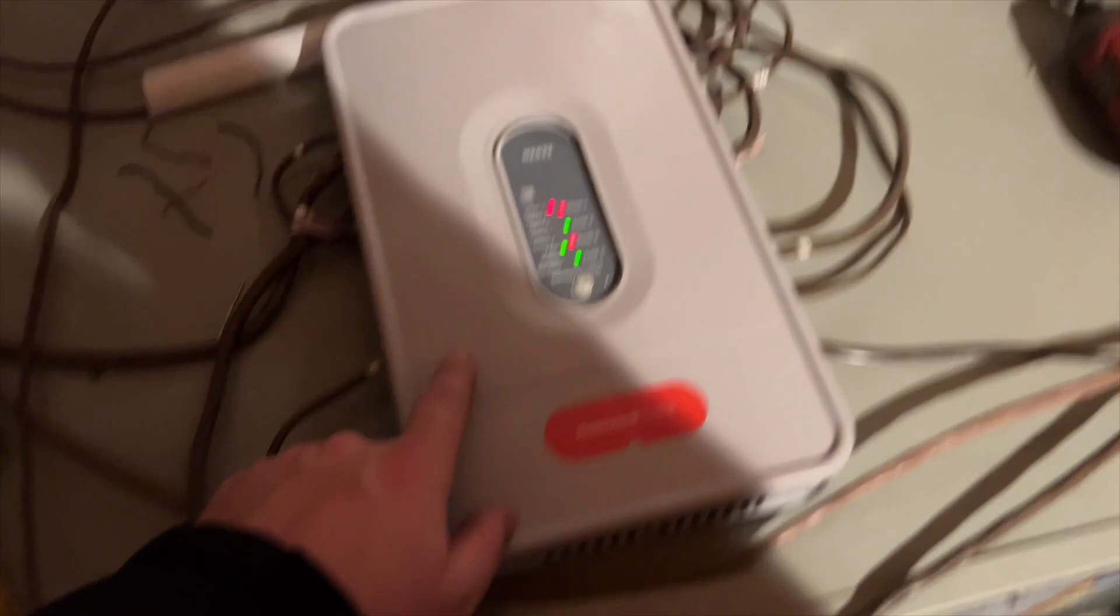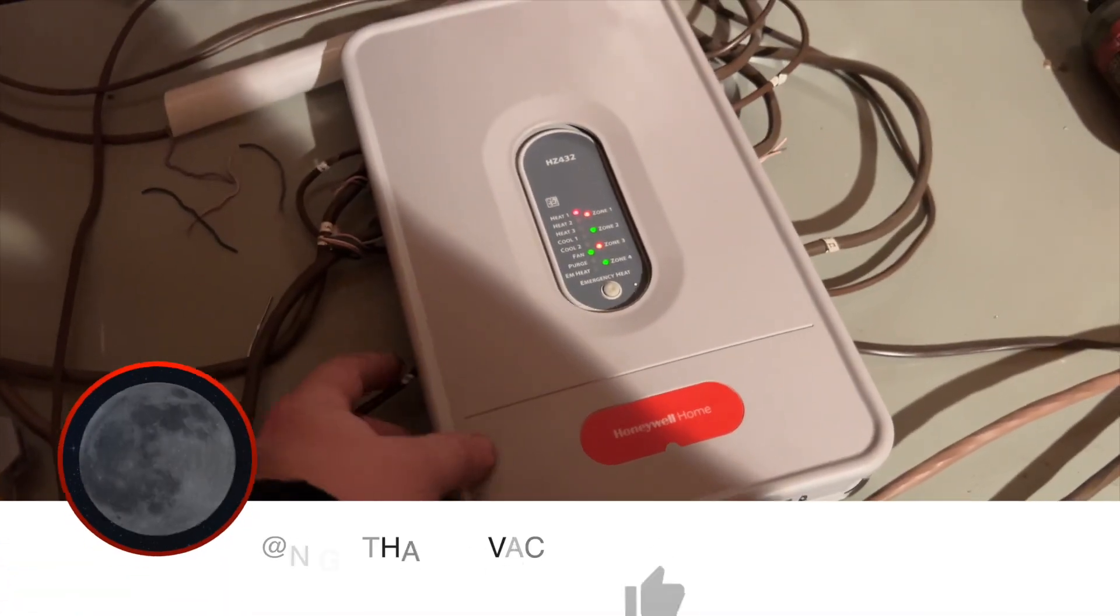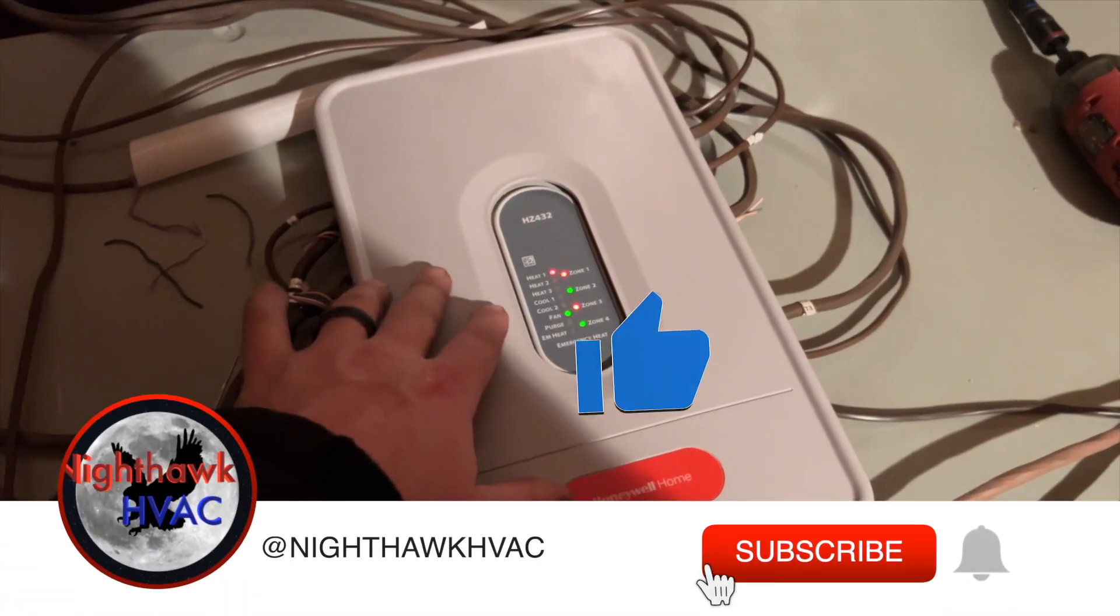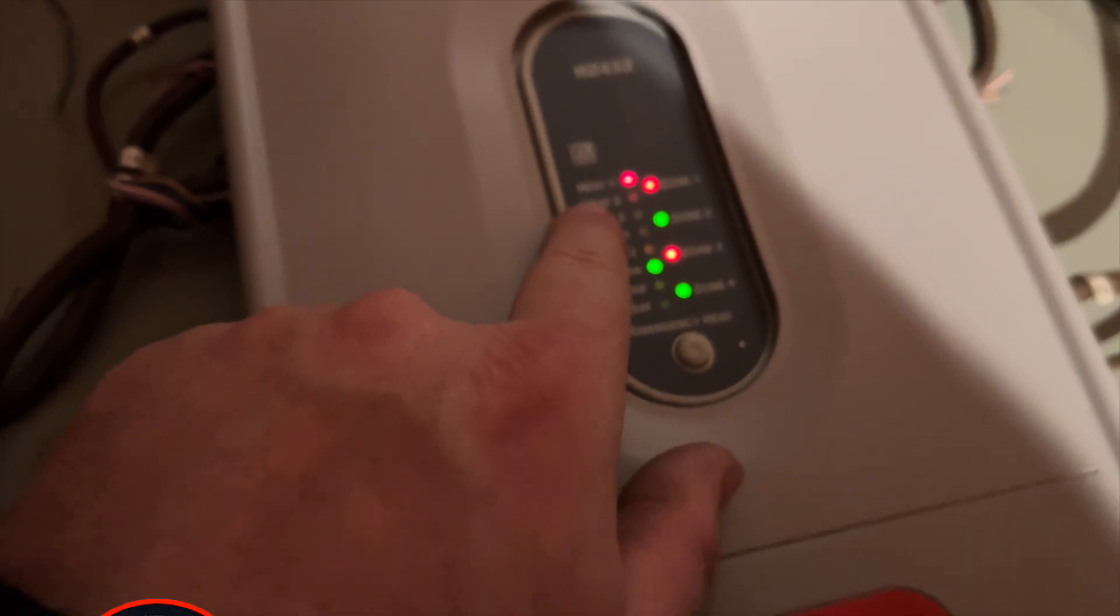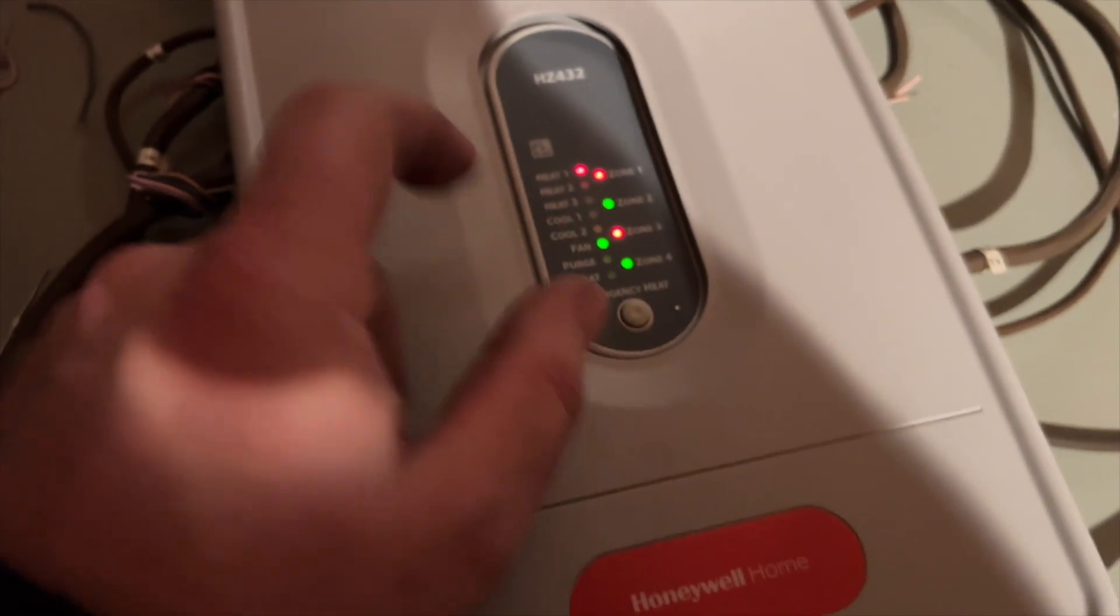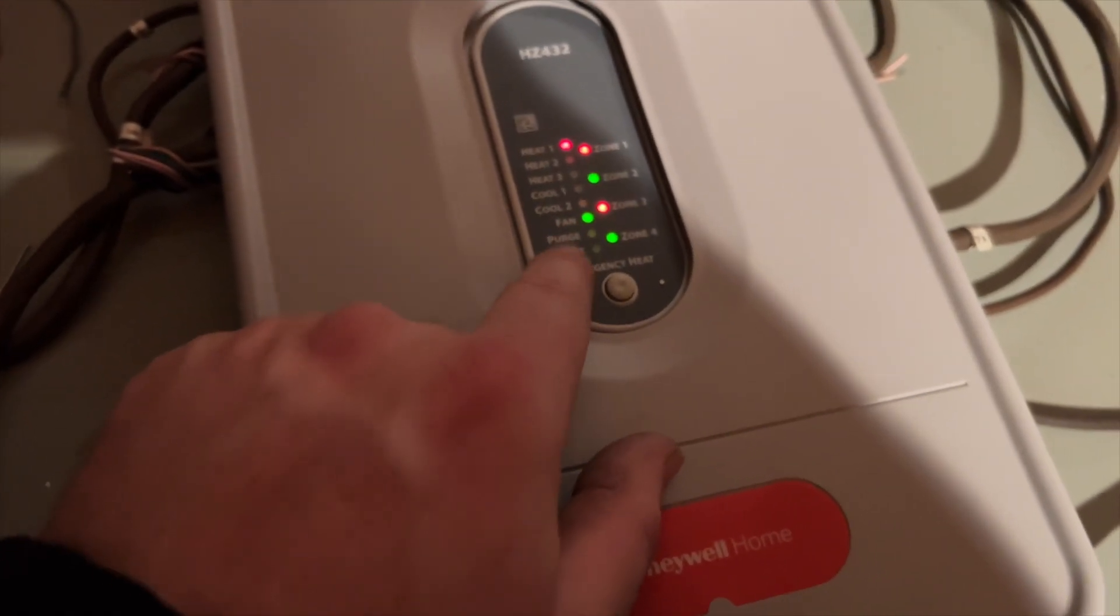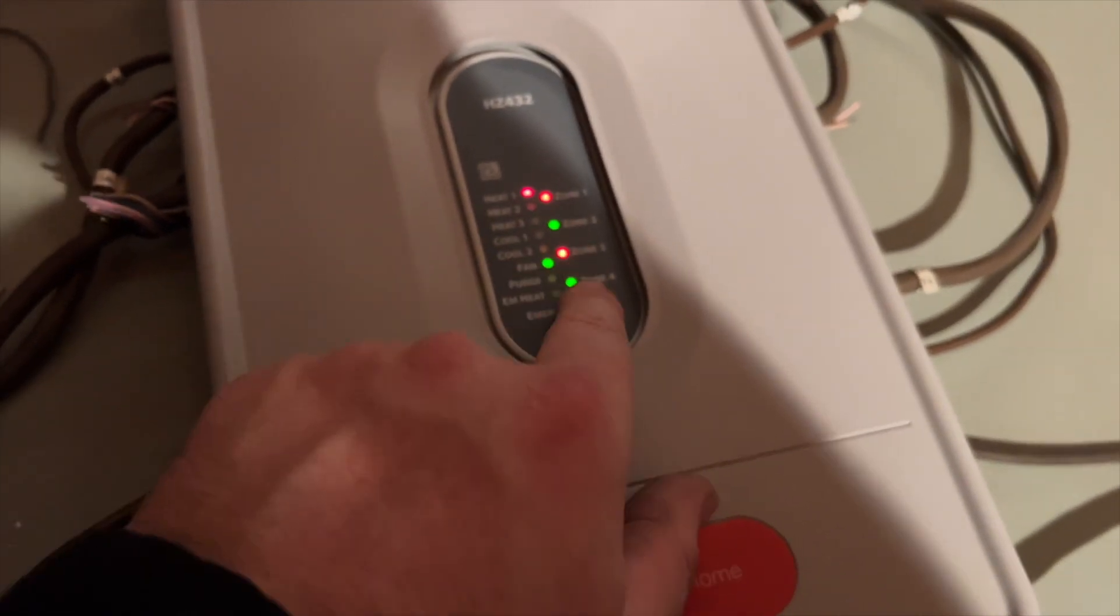So I tried to fit this video into a short, but it's just not going to happen. First things first, we have our basic displays. It tells us what mode: heat 1, heat 2, heat 3, cool 1, cool 2, fan, purge, emergency heat, and then zones.